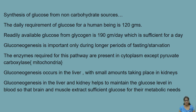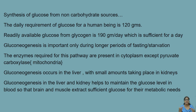Gluconeogenesis happens in the cytoplasm, but some enzymes present only in the mitochondria also regulate it. Glycolysis and gluconeogenesis are reciprocally regulated — if one is active, the other is inactive. You should be well aware of the Krebs cycle and glycolysis, because glycolysis shows what steps are involved and the Krebs cycle shows what other sources enter to get converted into phosphoenol pyruvate.